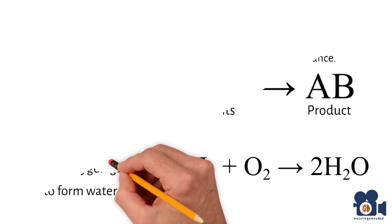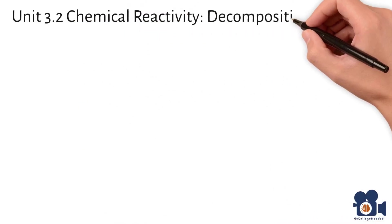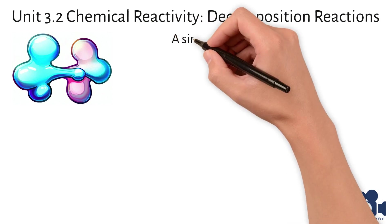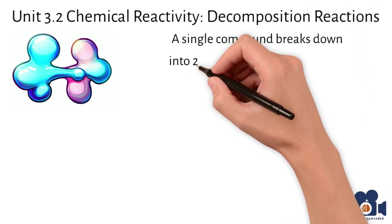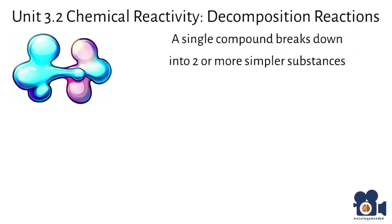Decomposition reactions are the opposite of combination reactions and are a type of chemical reaction in which a single compound breaks down into two or more simpler substances. The general equation for a decomposition reaction is AB going to A plus B. In this equation, AB represents the reactant and A and B represents the product.